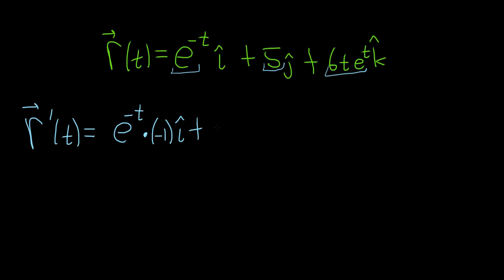Plus, the derivative of 5 is 0, so we just get 0 j hat. Plus, now here we do have to use the product rule. So we have 6t times e to the t.